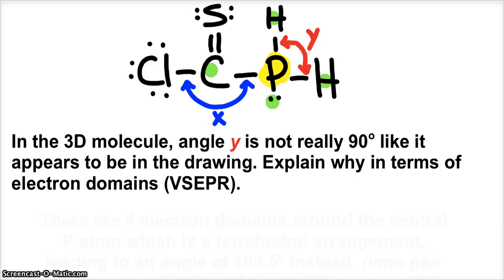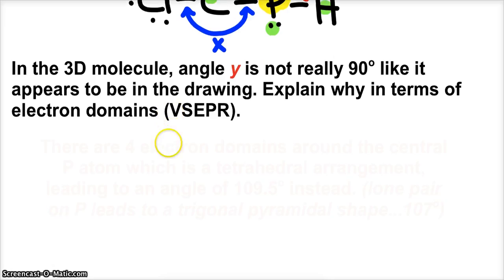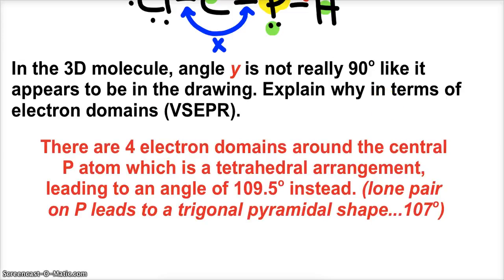All right. And so if I have 4 electron domains, then I should remember and realize that the geometry for 4 electron domains is a tetrahedral arrangement. And so in a tetrahedral arrangement, we don't have 90 degrees. Instead, we have a 109.5 degree angle of separation. Technically, that lone pair actually makes the angles at 107 degrees. But 109.5 is totally acceptable.